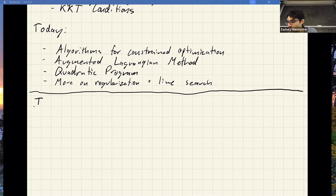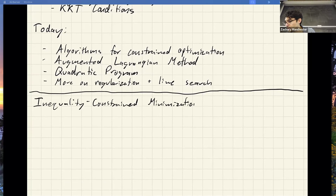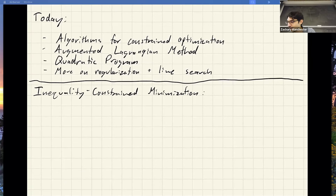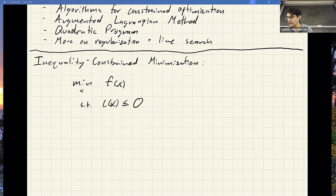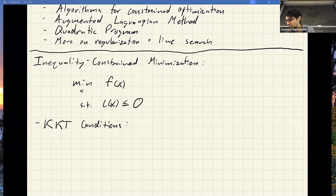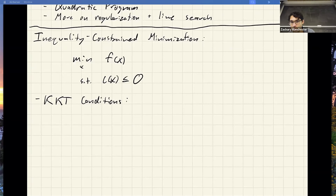Let's do a quick refresher on inequality-constrained minimization. The problem is: minimize some objective f subject to c(x) ≤ 0. At the end of last time we wrote down the KKT conditions, which are basically the fancied-up version of 'gradient equals zero at a local optimum' when you have inequality constraints. The first condition is called stationarity — setting the gradient of the Lagrangian equal to zero. The next is called primal feasibility, meaning the constraints on the primal variables x are satisfied.